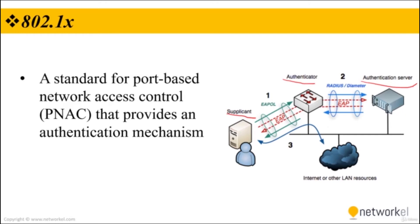The authenticator acts like a security guard to protect a network. The supplicant — the client device — is not allowed access through the authenticator to the protected side of the network until the supplicant's identity has been validated and authorized. With 802.1x authentication, the supplicant must initially provide the required credentials to the authenticator, as specified in advance by the network administrator.